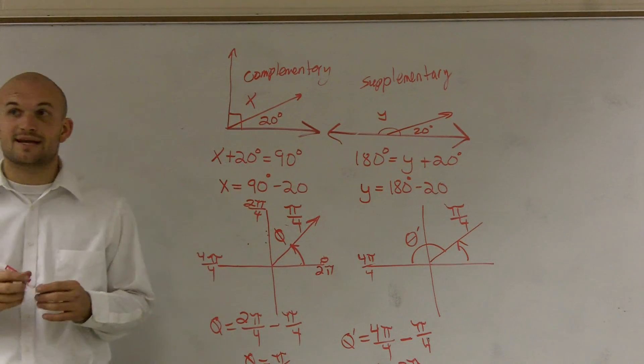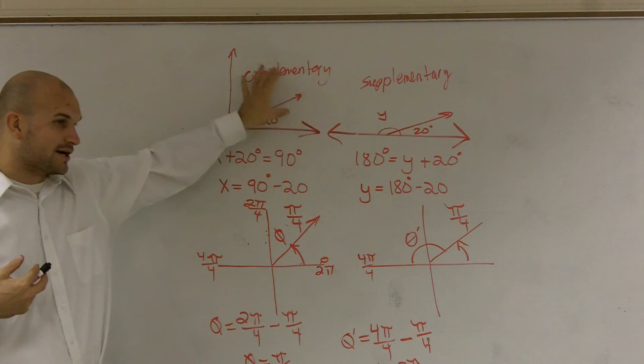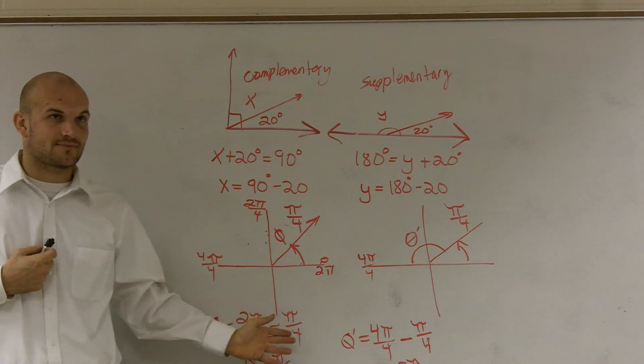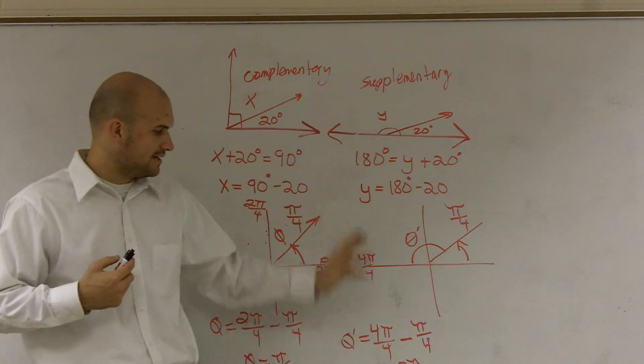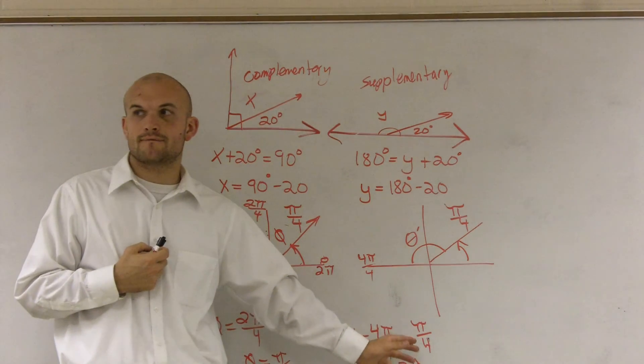So the main important thing I want to stress in your head, guys, whenever you're doing complementary and supplementary angles, when you have complementary, all you need to do is take 90 and subtract your angle. And to take supplementary, you take 180 and subtract your angle.